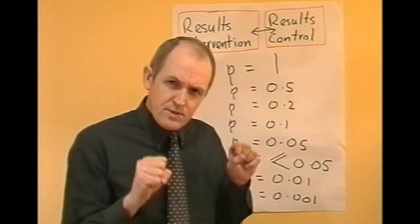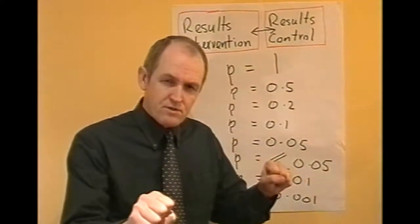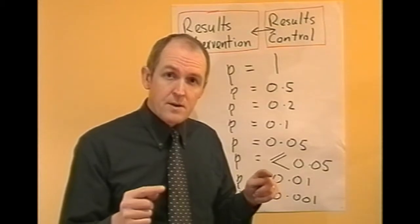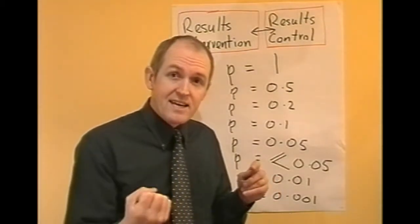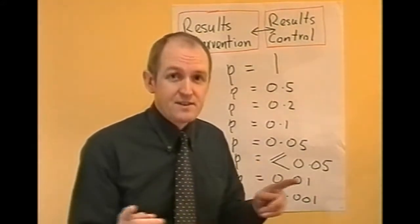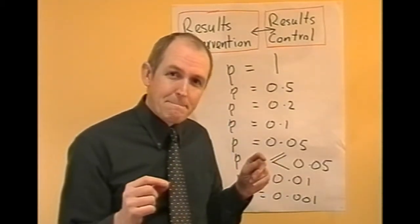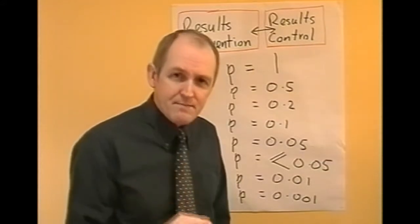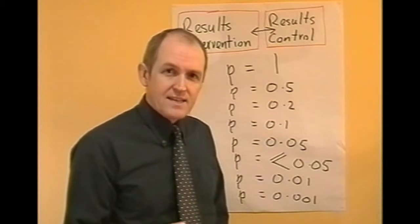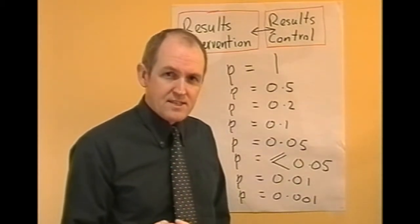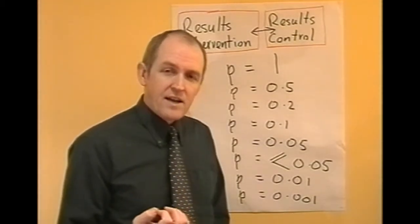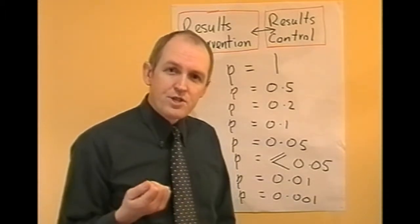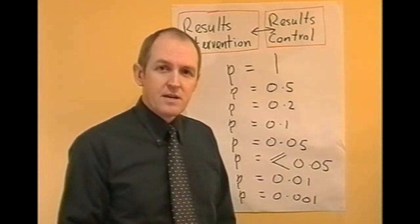You end up with two groups of data: the intervention results and the control group results. You want to know if there's a genuine difference between those two groups, because it is only if there is a genuine difference that the independent variable — the intervention — is actually doing something. You don't guess or estimate; you work it out mathematically. Statisticians have worked out statistical tests to quantify how sure we are that the difference is genuine. The p-value is the probability that the result arose by chance; therefore, the smaller the p-value, the more likely it is to be a genuine result.